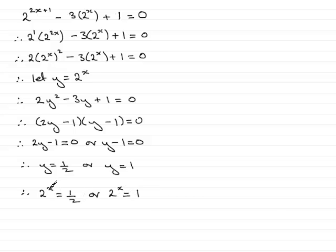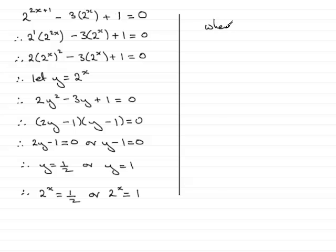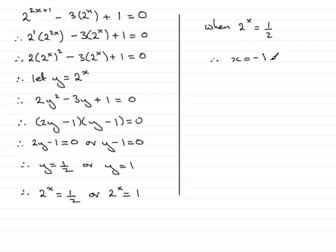Now these are obvious solutions, but if you didn't know them, you can always take logs to both sides. When we have 2 to the power x equaling a half, x is minus 1, because 2 to the power minus 1 means 1 over 2 to the power 1, which is a half. So this is an obvious solution: x equals minus 1. But if you didn't know it, you can always use logs as in the last example.